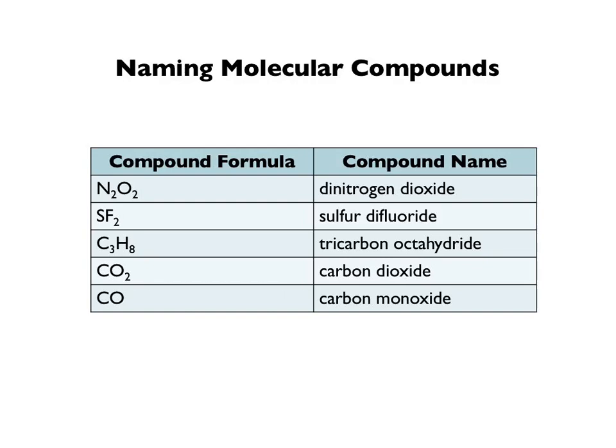Ions do not get prefixes, but molecules do. So this first one is called dinitrogen dioxide — di stands for two, so two nitrogens, two oxygens. Next one is sulfur difluoride: one sulfur, two fluorines. Then carbon octahydride: three carbons, eight hydrogens. Notice I'm changing the ending — hydrogen becomes hydride, oxygen becomes oxide, fluorine becomes fluoride.